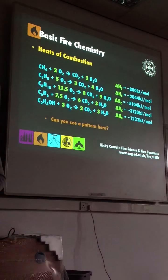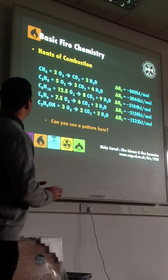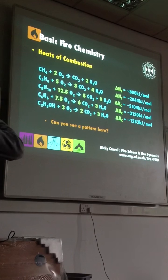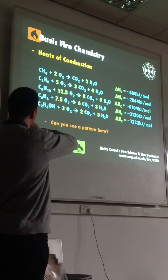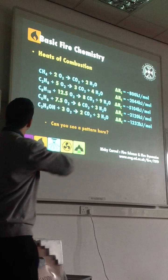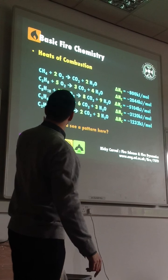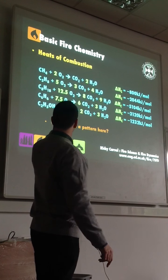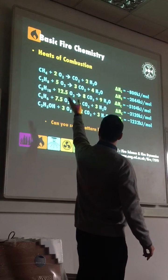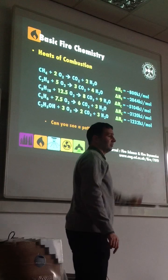So, a few more things before we finish today. We've talked about heats of combustion for various chemicals: methane, propane, octane, benzene, and ethanol — with the relative quantities required for stoichiometric burning, the amount of products you get, and heats of combustion.